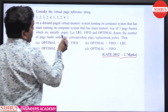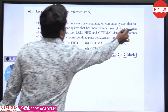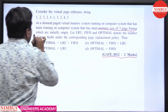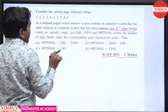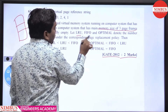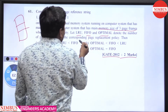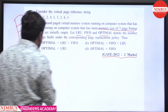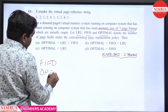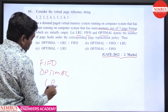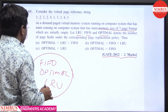On a demand paged virtual memory system running on a computer with a frame size of 3, where all frames are initially empty. Let LRU, FIFO, and Optimal denote the number of page faults corresponding to each page replacement policy. The question asks us to apply FIFO, Optimal, and LRU and find the relation between their page fault counts.